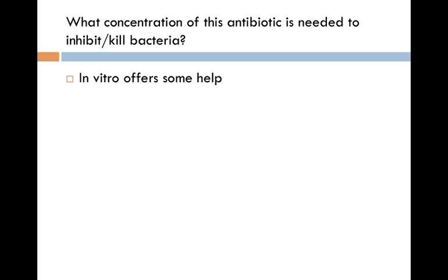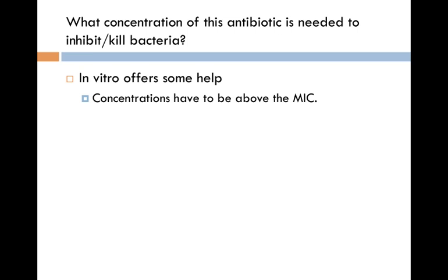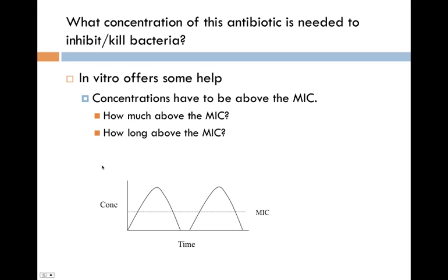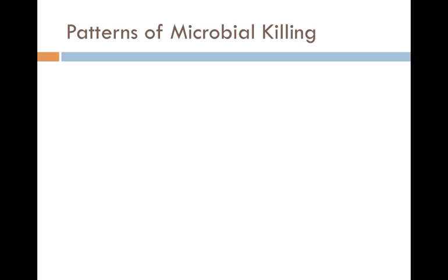How do we know what concentration is needed to inhibit or kill? In vitro offers some help. Concentrations have to be above the minimum inhibitory concentration. So if your MIC is here, below it won't be effective. You want concentrations above the MIC, but how much above? Could they just ride right along above the MIC, or does it help to have them higher? And how long do they have to be above the MIC? It's not contact kill, but some bug-drug combinations need longer periods of time above the MIC.